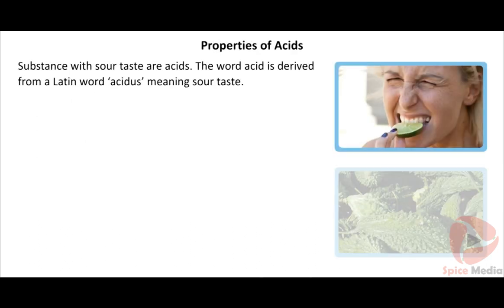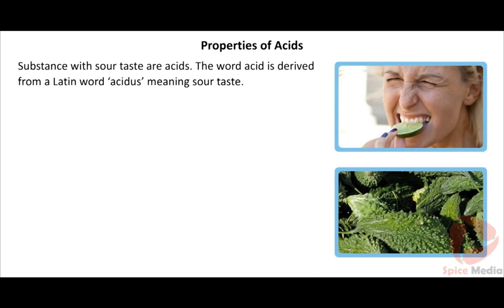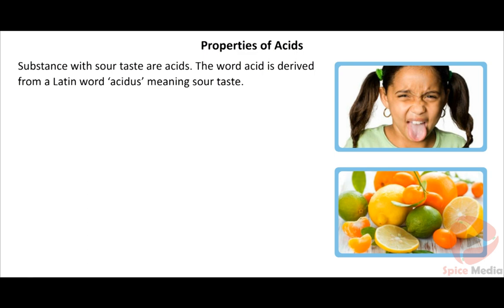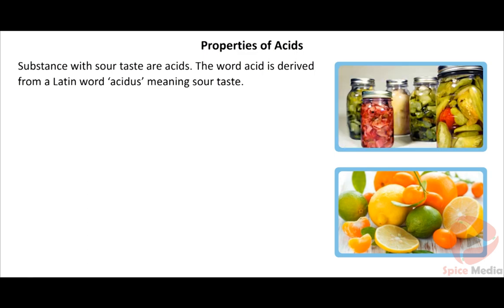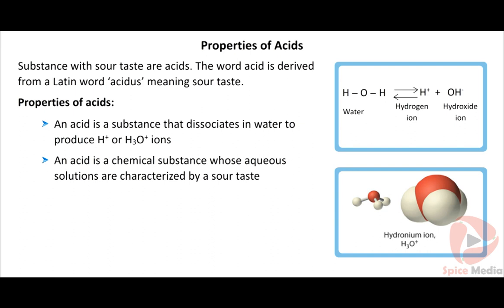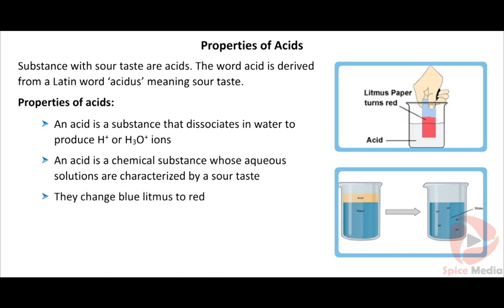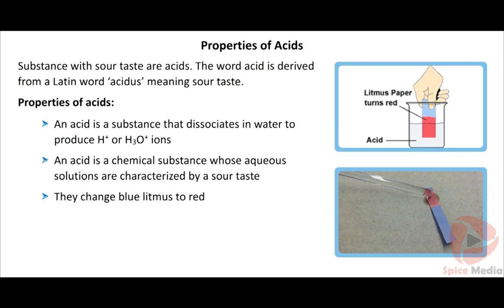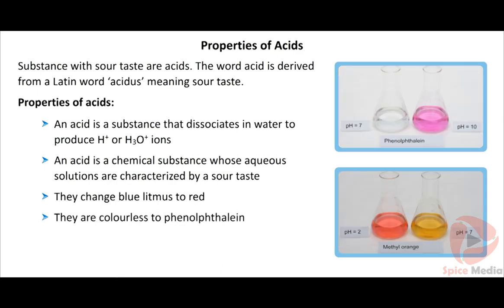Substances with a sour taste are acids. The word 'acid' is derived from the Latin word acidus, meaning sour taste. The properties of acids are: an acid is a substance that dissociates in water to produce H⁺ or H₃O⁺ ions; an acid is a chemical substance whose aqueous solutions are characterized by a sour taste; they change blue litmus to red; they are colorless to phenolphthalein; and they are pink with methyl orange.